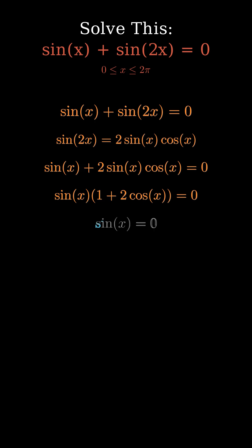Now we solve each factor separately. First, if sine x equals 0, that gives one set of solutions. Then we'll handle the second factor.